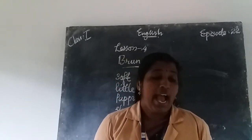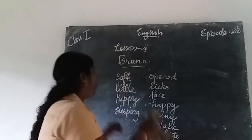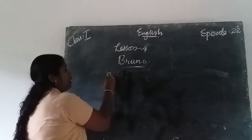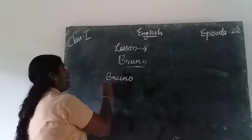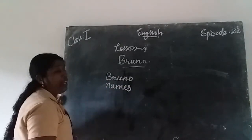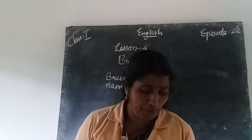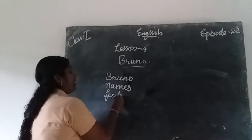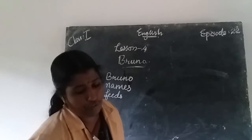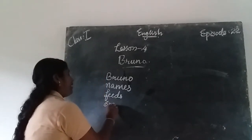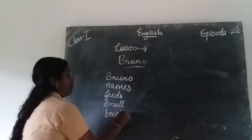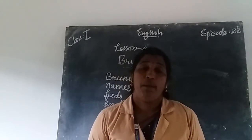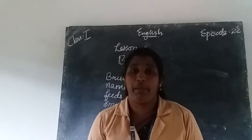Let us move on to the next paragraph. Ali names him Bruno — N-A-M-E-S. Ali called the puppy Bruno. Ali feeds Bruno from a small bowl — feeds F-E-E-D-S, small S-M-A-L-L, bowl B-O-W-L.